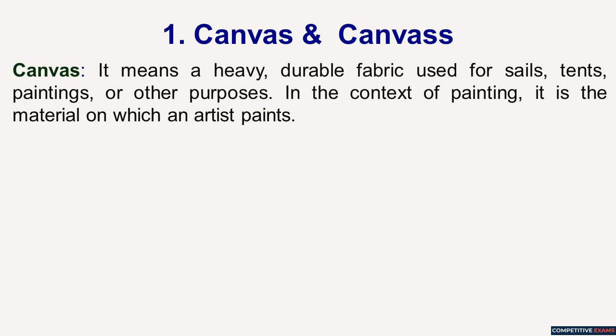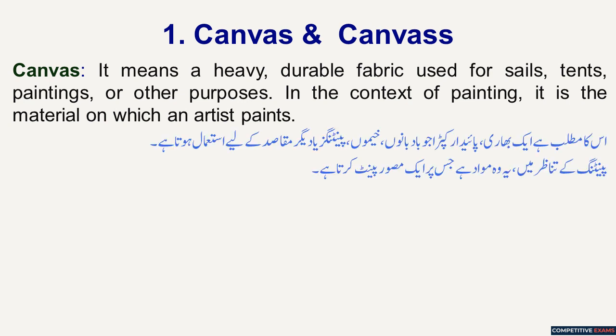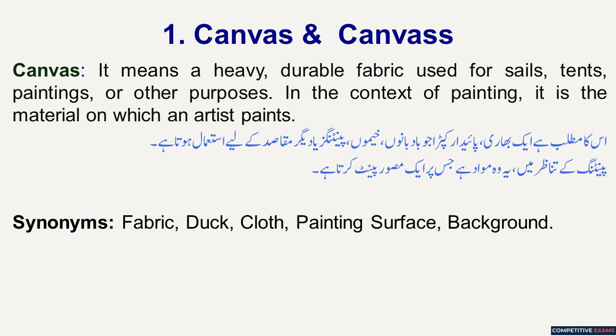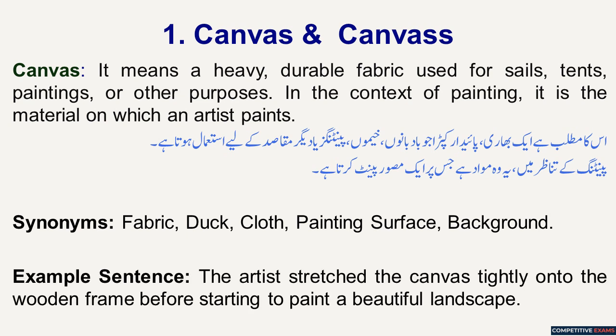Canvas and Canvass. Canvas means a heavy, durable fabric used for sails, tents, paintings or other purposes. In the context of painting, it is the material on which an artist paints. Synonyms include fabric, cloth, painting surface and background. Example sentence: The artist stretched the canvas tightly onto the wooden frame before starting to paint a beautiful landscape.